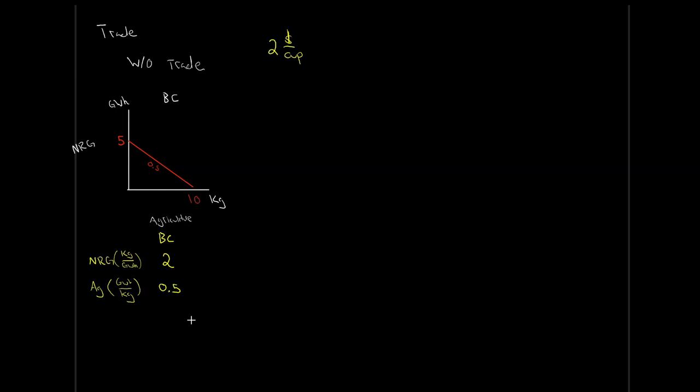If BC was just operating alone with no trade, whatever we make in BC is what we get to eat and use. Our production possibilities frontier is no different than our consumption possibilities. In a world without trade, your production will equal your consumption — you will only produce what you actually want to consume. Our production possibilities would be anywhere along this red line, and wherever we choose, that would also be what we consume.